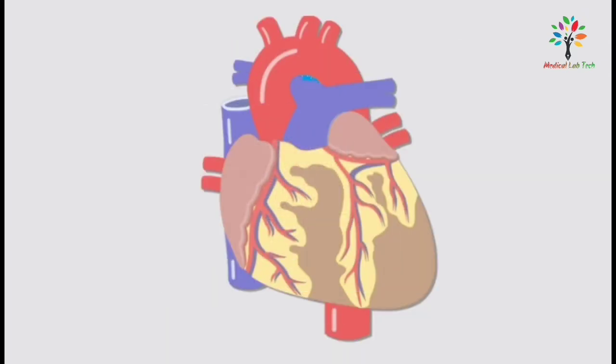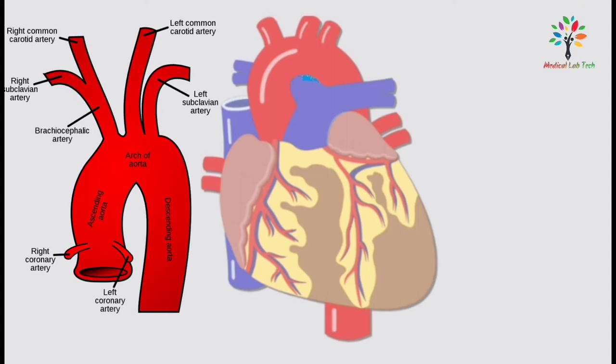Next, I am going to talk about the arch of aorta. The arch of aorta is a continuation of the ascending aorta, and three branches arise from its upper aspect. The first is the brachiocephalic artery, which passes upward and forms two branches: the right common carotid artery, which supplies blood to the neck and head, and the right subclavian artery, which supplies blood to the right upper limb.